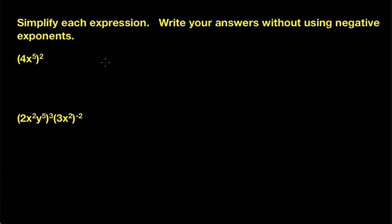Let's use our power of a product property to simplify these expressions. Here we have a product 4x to the fifth, and we're raising that to the second power. We know from our property that we can just distribute this outside exponent to both the 4 and x to the fifth.